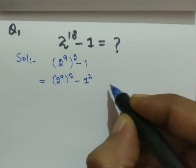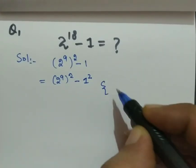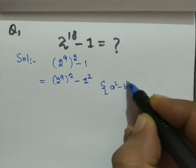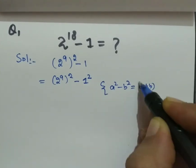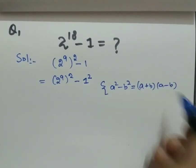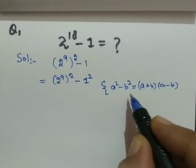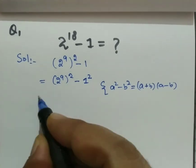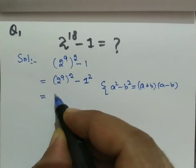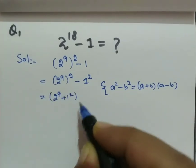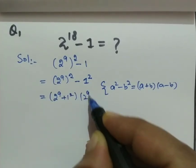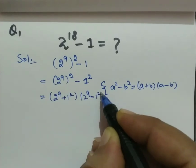So here we can use the identity a^2 minus b^2, which equals (a+b) times (a-b). We will use this identity here: (2^9 + 1) times (2^9 - 1).